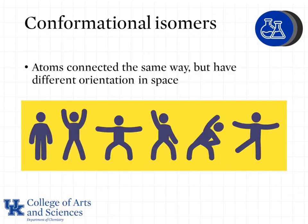The first type of isomers we will look at are conformational isomers. These are molecules which are connected the same way but have a different orientation in space because the atoms can rotate around single bonds. The way I want you to think about this is your body — if I move my arms or legs or bend or twist, my body is still connected to the other parts in the same way.